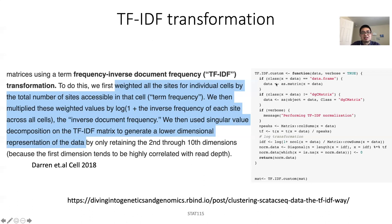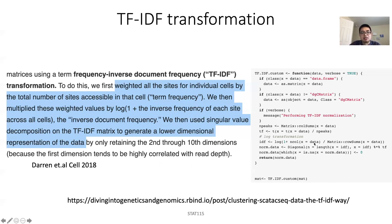If you translate this into R code, it's not that complicated. You get the column sums of the matrix — essentially the total number of accessible peaks per cell — and divide each entry by that total. Then you calculate the row sums — how many cells have a particular peak open — and compute the inverse ratio. After that, you just do a matrix multiplication.